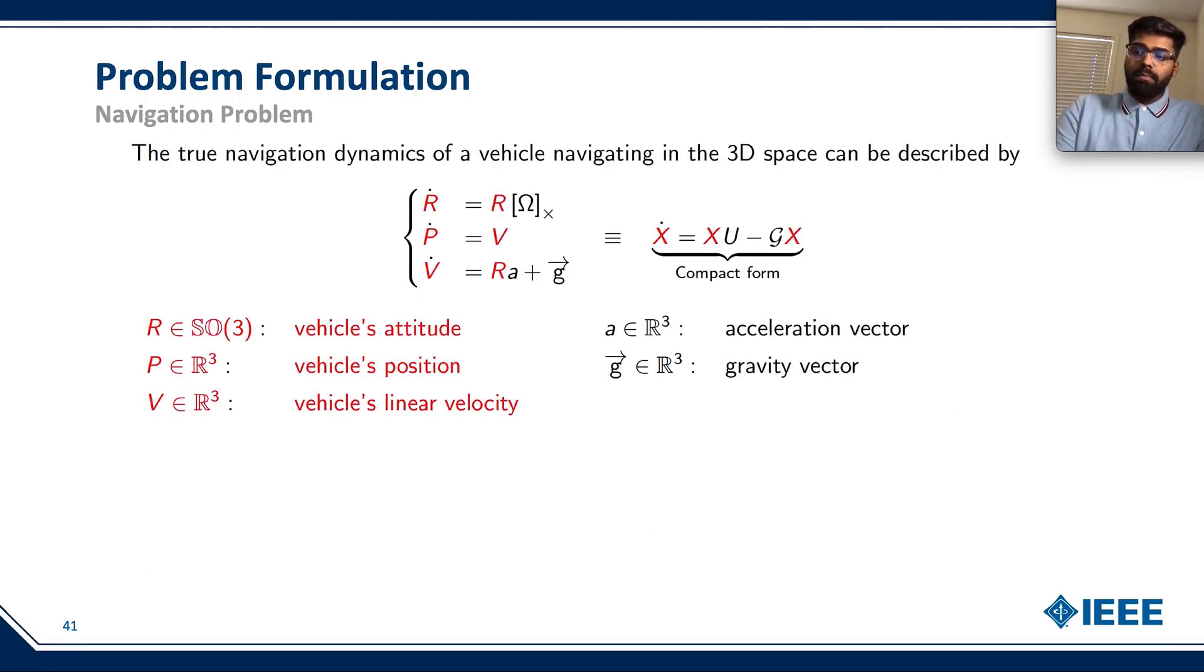Here we can see that all the red components are the unknowns. This includes X, that is our navigation matrix, which includes R, P, and V, which we discussed earlier as the orientation, position, and linear velocity of the vehicle.